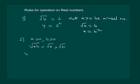For example, if we have under root of 15, we can factorize it as under root of 3 into 5, and that can be written as under root of 3 into under root of 5.